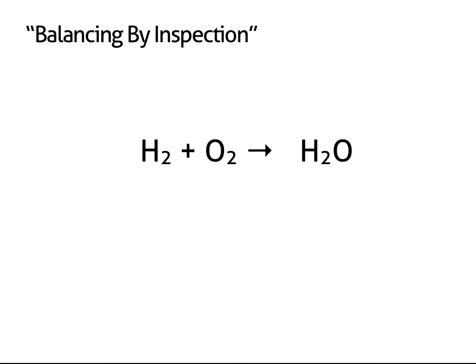You're probably familiar with the method taught in most classes, balancing by inspection. Starting with an equation with no coefficients, pick an element on either side to balance. In this equation we could try balancing oxygen. Now we balance hydrogen by adding its coefficients. This method works for very simple reactions, but can be difficult to use with more complicated reactions.